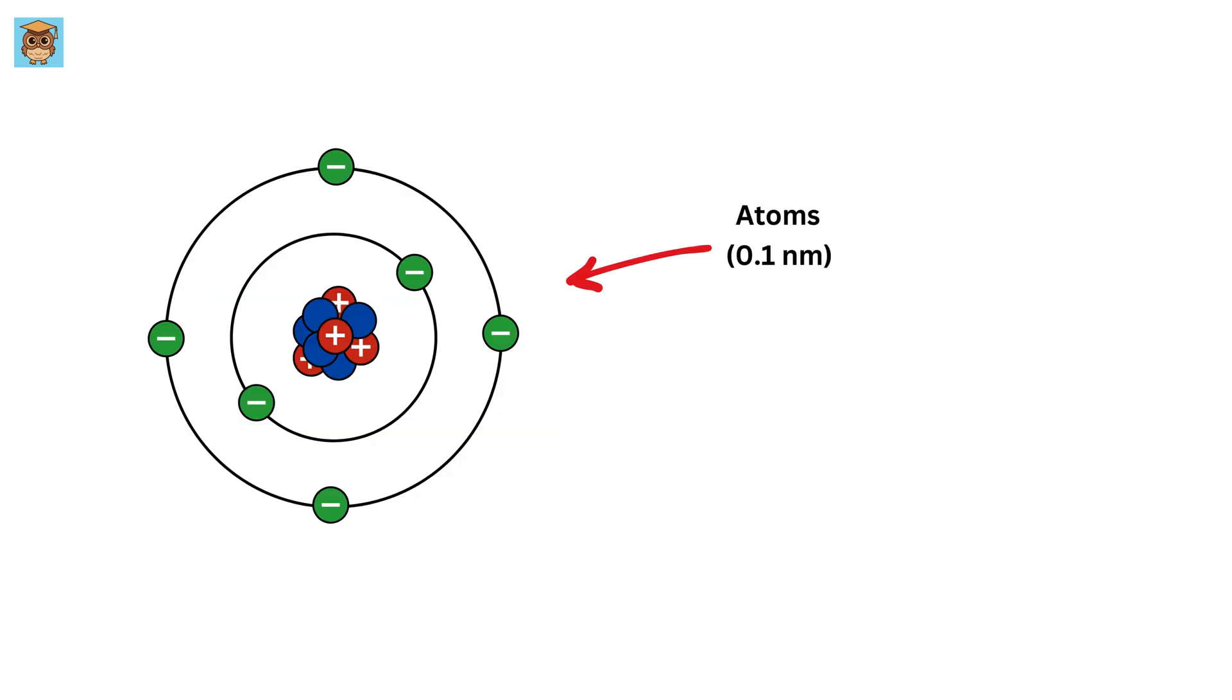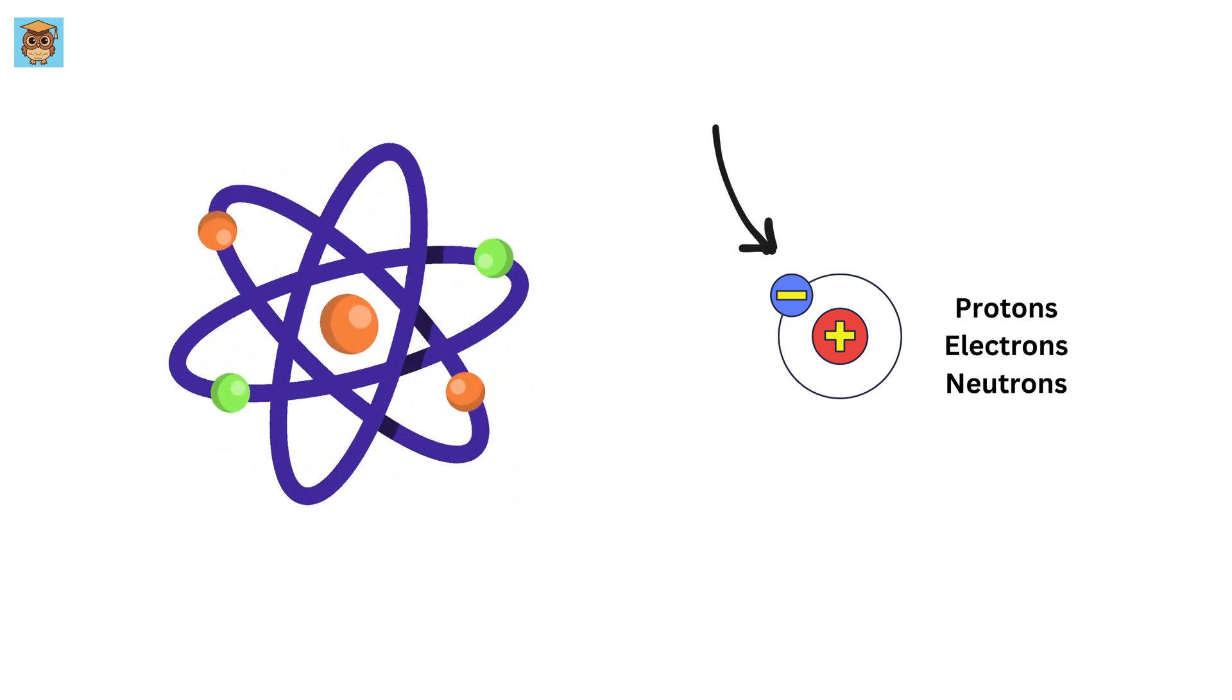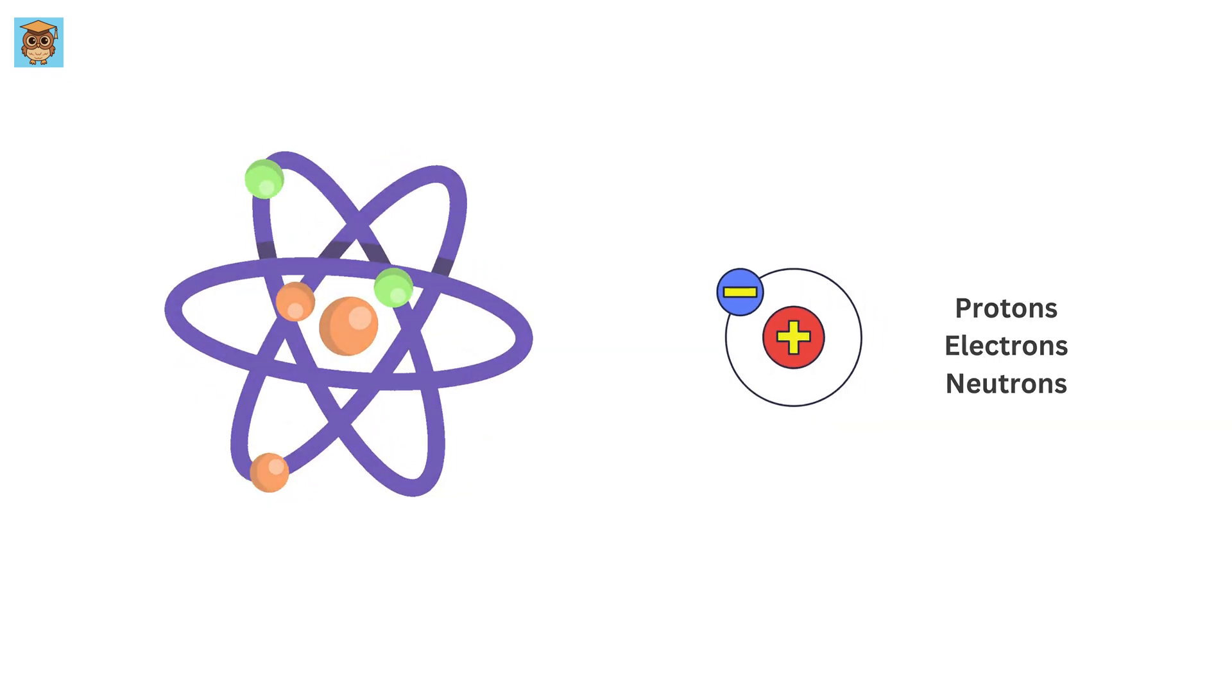Atoms, the building blocks of everything, are so small that you could fit 1 million of them in the width of a single human hair. And even atoms aren't the smallest things out there. Inside every atom, there are even tinier building blocks: protons, neutrons, and electrons. Protons and neutrons sit tightly packed in the center of the atom, forming the nucleus, while electrons move around them in a sort of cloud.